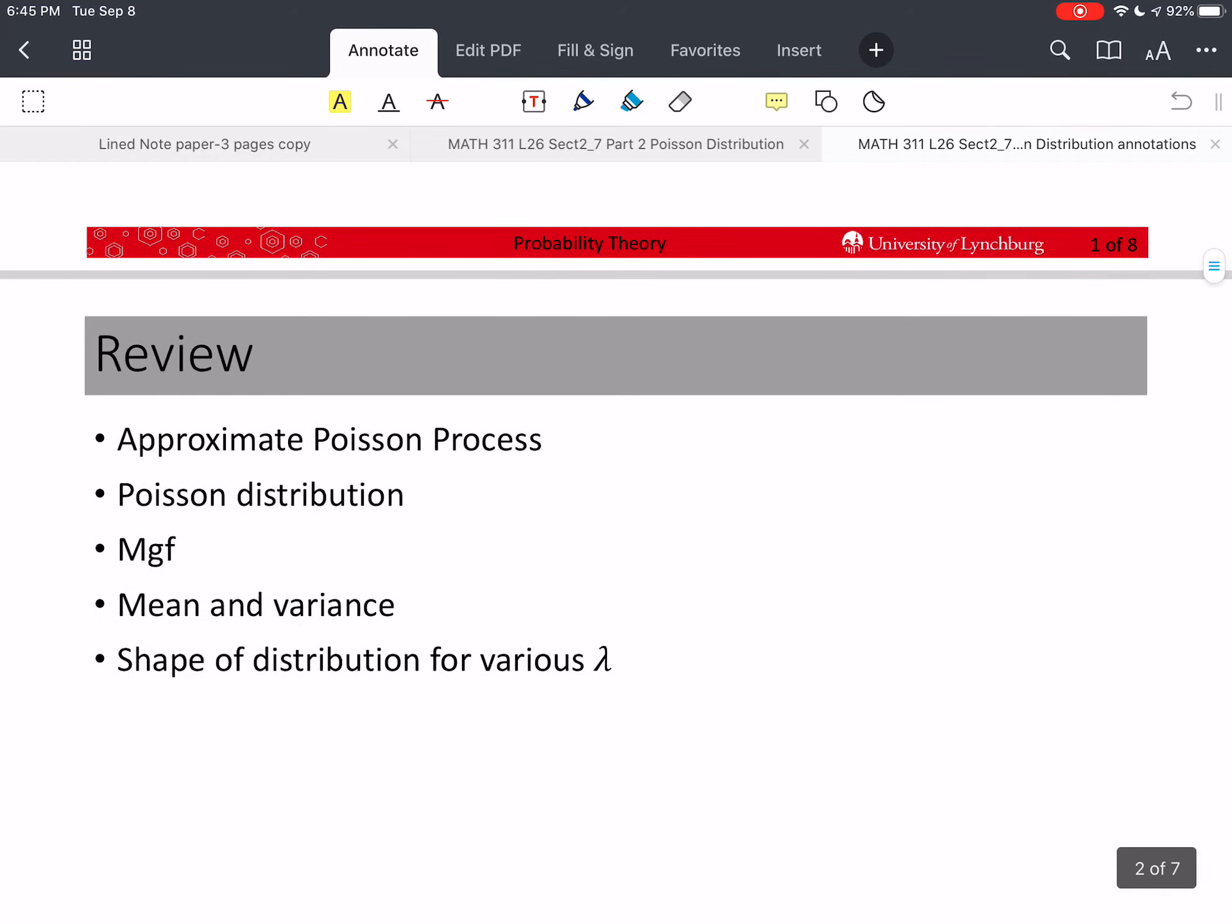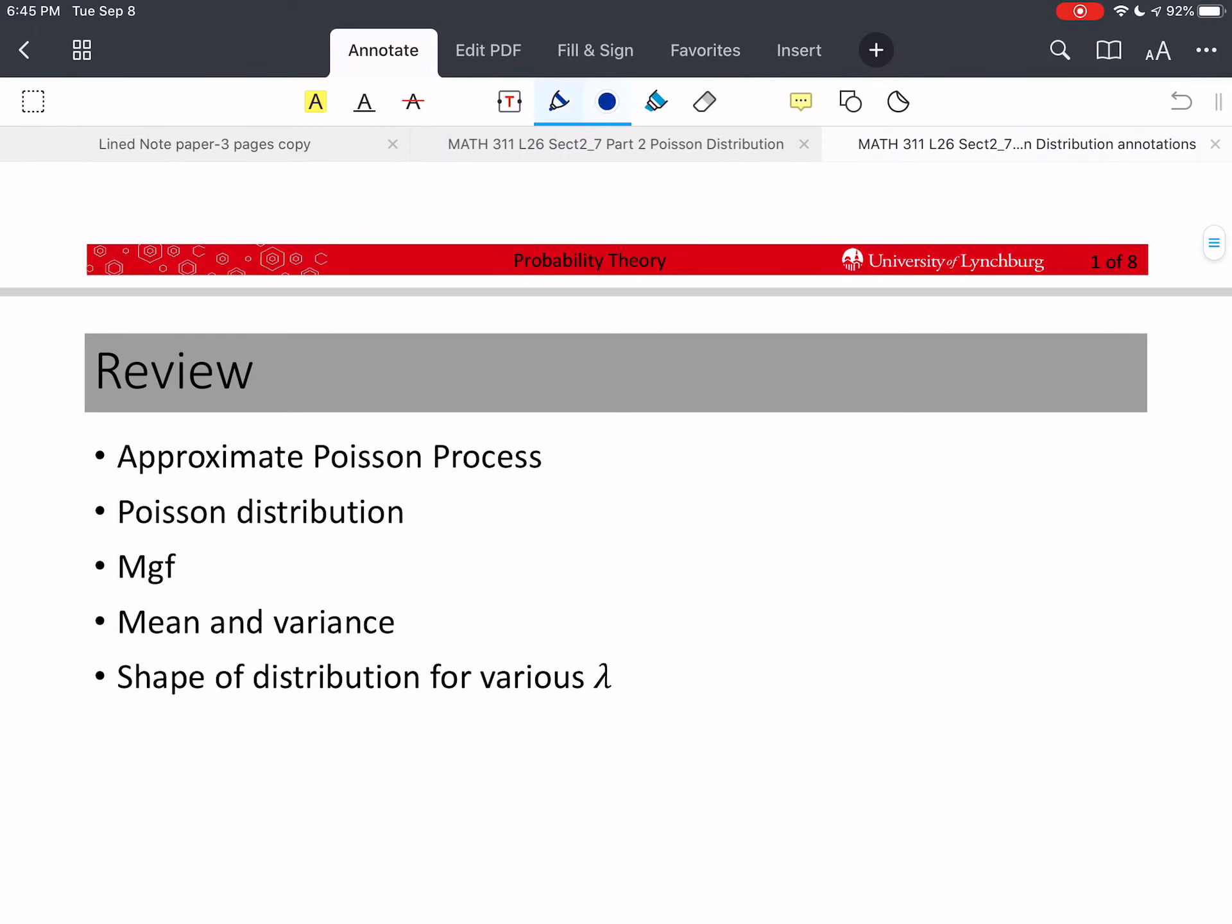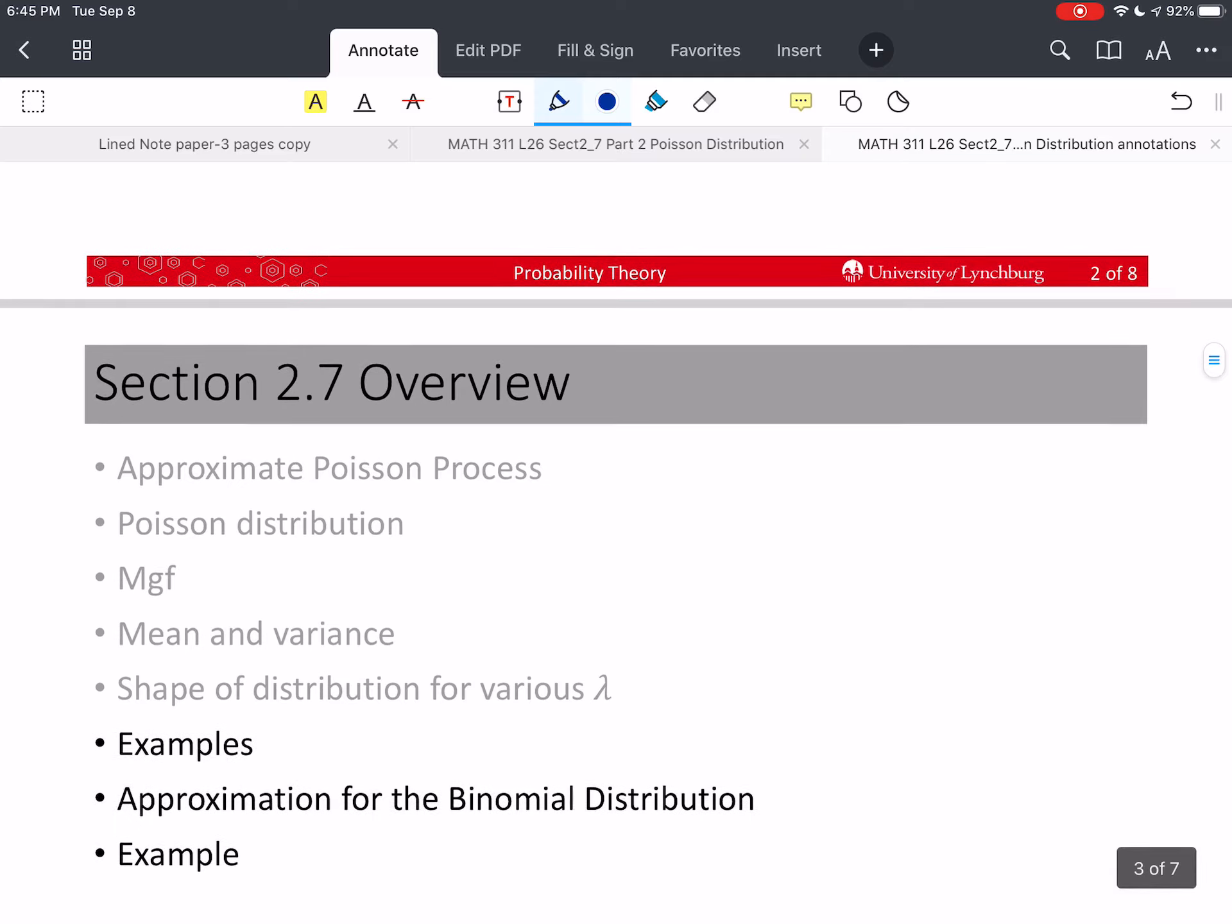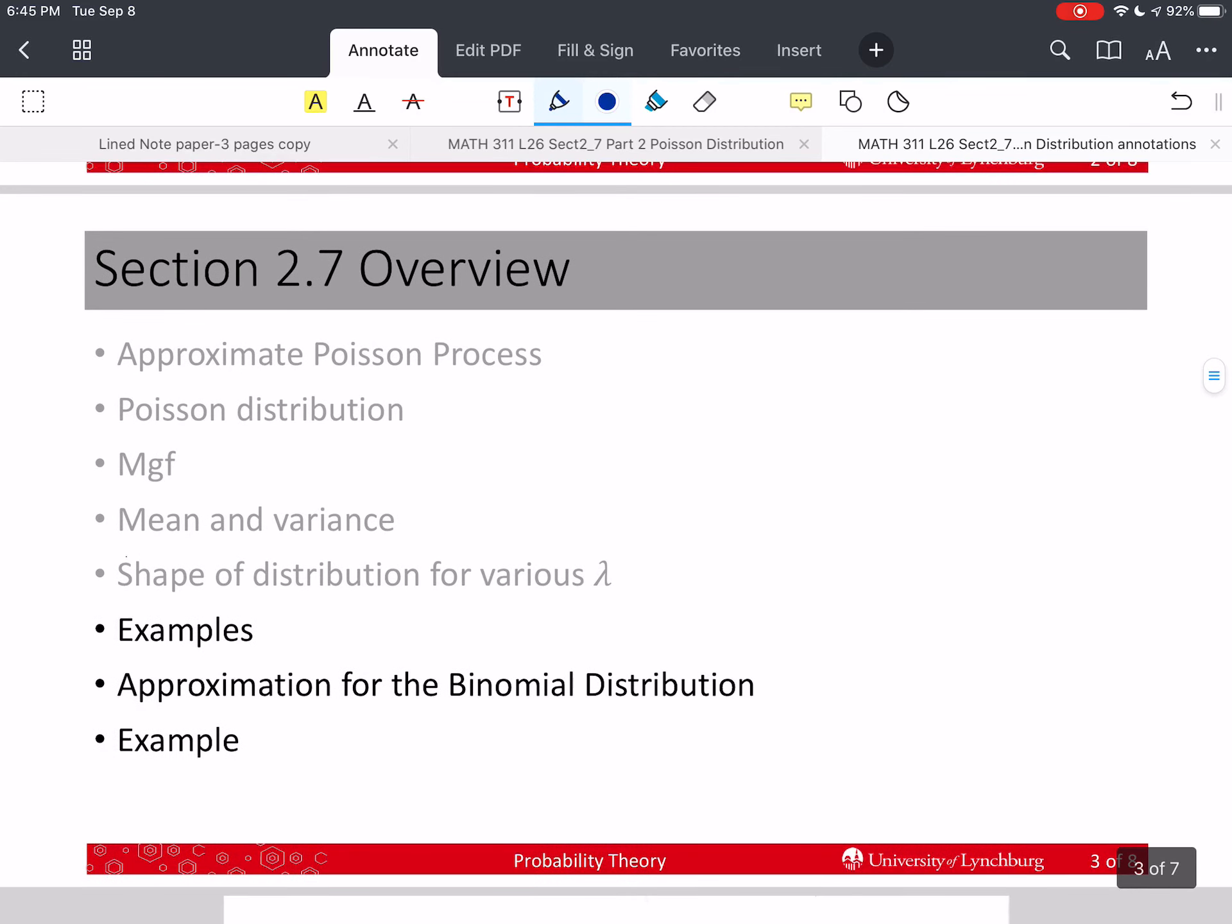Last time, we introduced the approximate Poisson process, and that led to the Poisson distribution or PMF. We then introduced the moment-generating function and used it to derive the mean and variance. We were not able to talk about the shape because I had a technical glitch. So this time, we're going to talk about the shape of the distribution for various lambda, do some examples, and talk about the approximation of the Poisson for the binomial distribution.